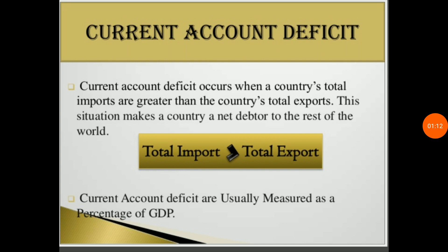So when imports of a country are more than its exports, it means the dollars going from our country are more than the dollars that come to our country. That type of situation is basically current account deficit — when total imports are greater than total exports of a country.